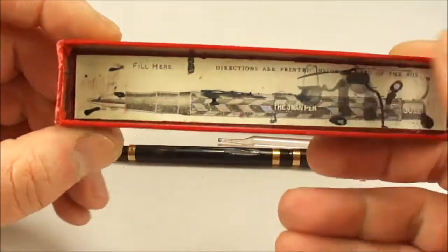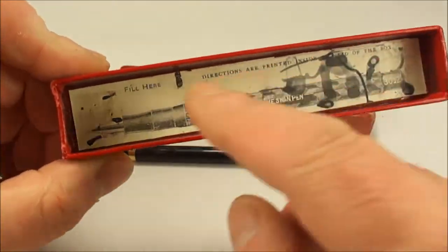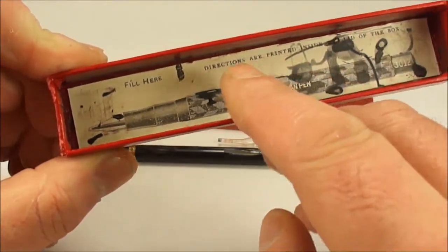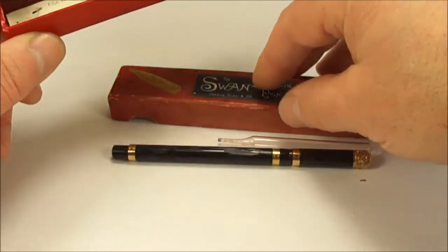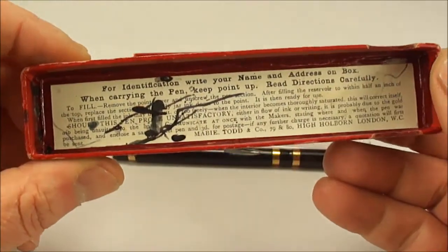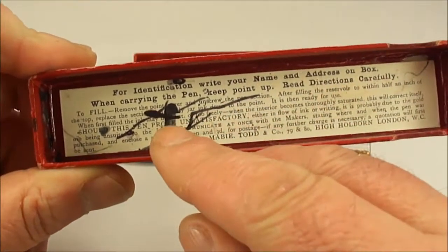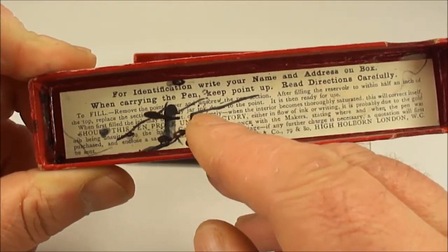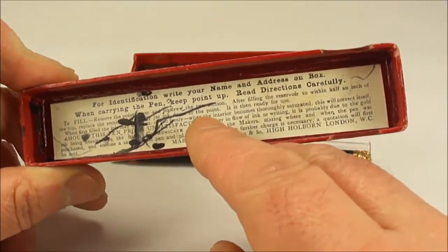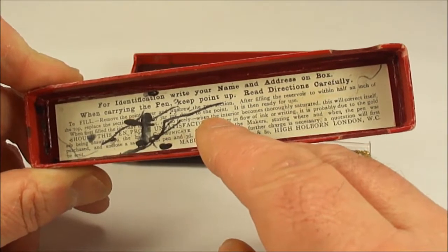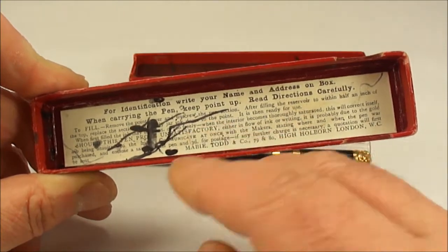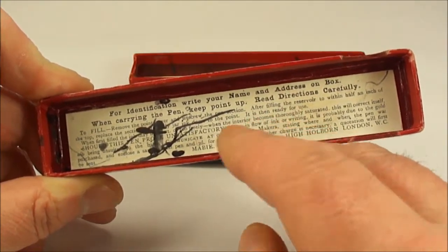Let's pop the pen and contents on the desk. Let's show you the bottom of the box. You've got the pen at the bottom there and it gives you directions printed on the base. The directions tell you to fill: remove the point and unscrew the section. After filling the reservoir to within half an inch of the top, replace the section, and then it says it's ready to use.